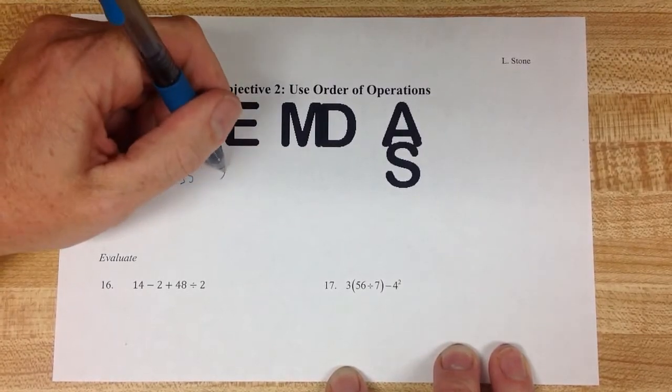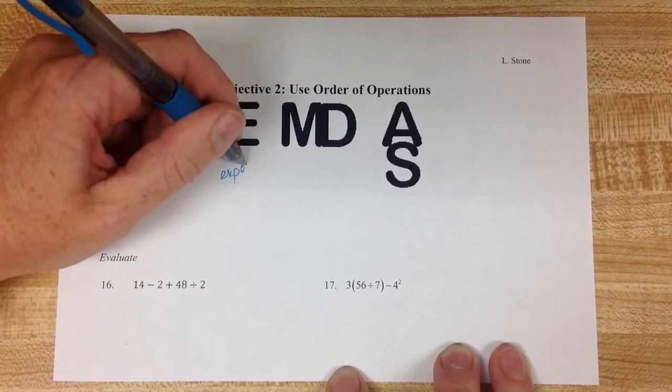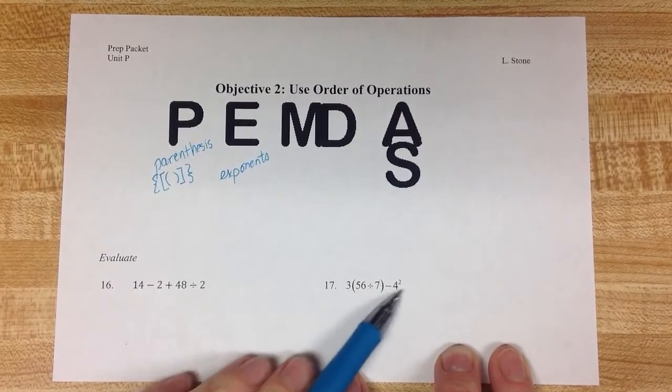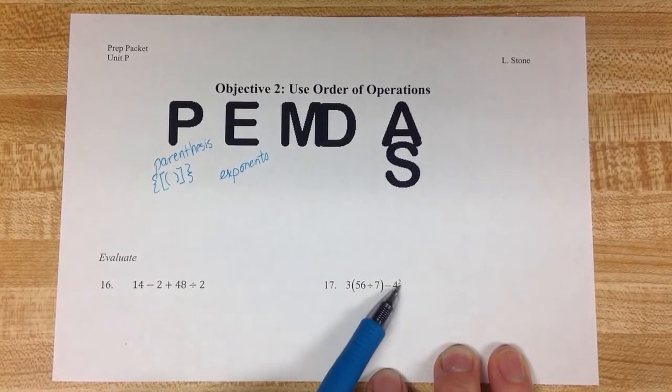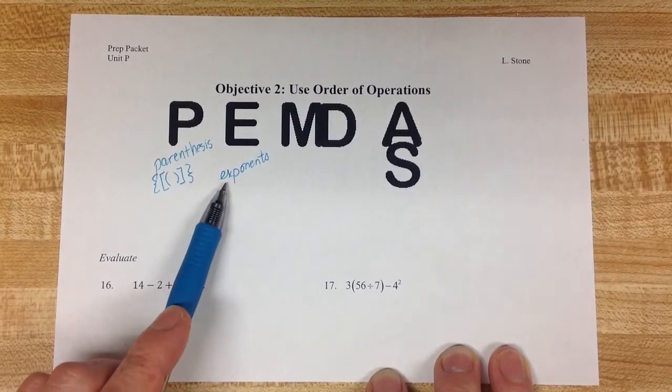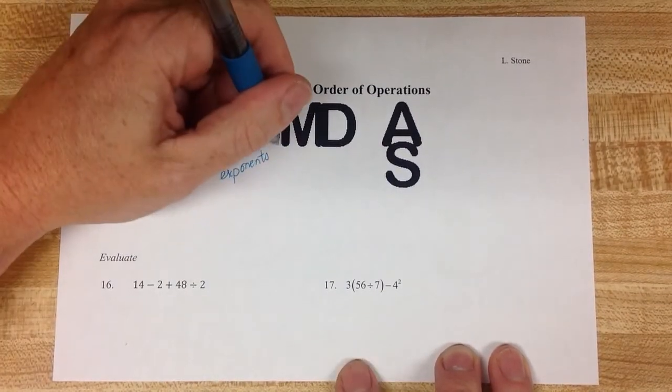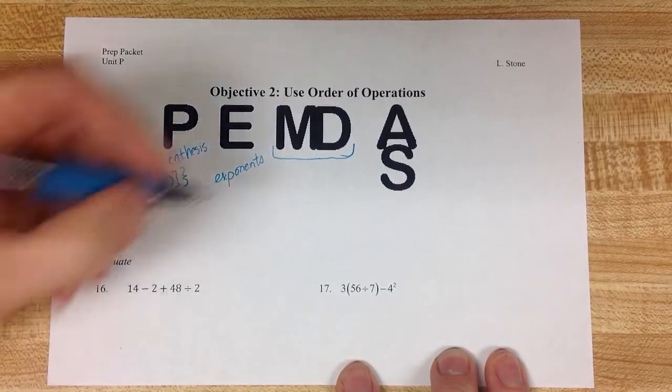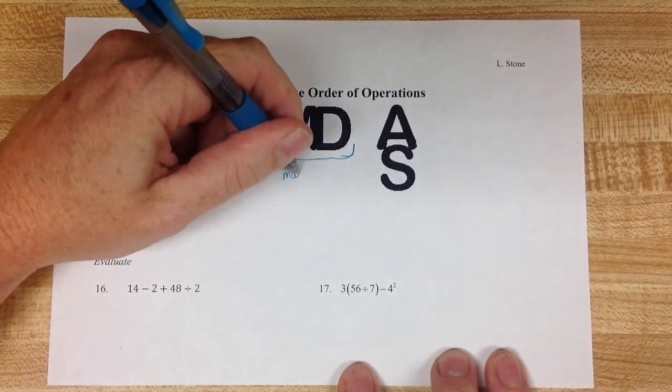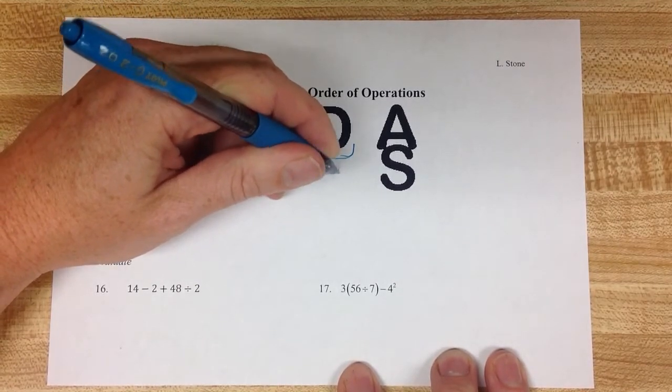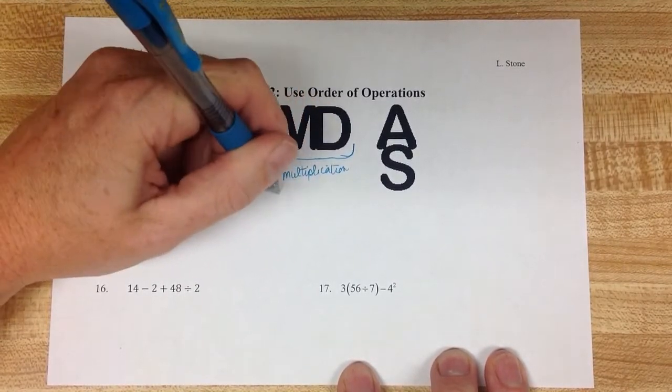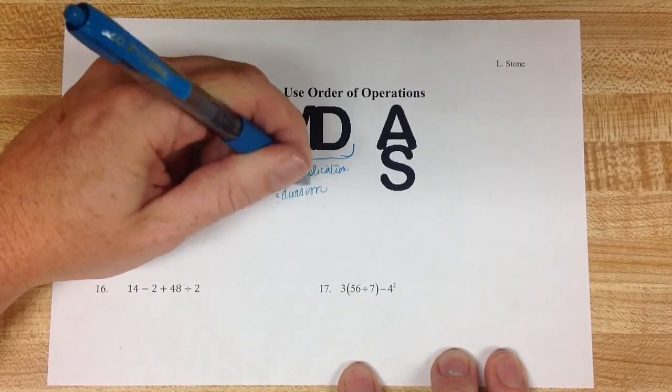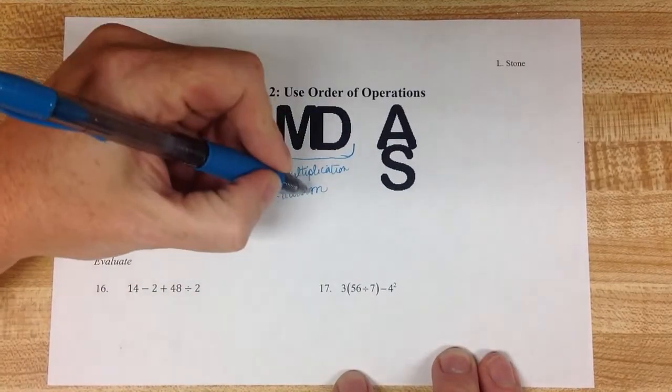E stands for what we just learned in the last objective: Exponents. So if you're reading through a math problem and you see an exponent, that's the second math that you're going to do. I write the MD as if it were one letter, because multiplication and division happen together as one step.